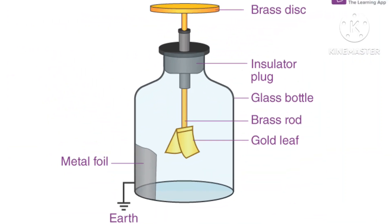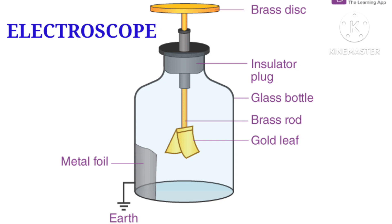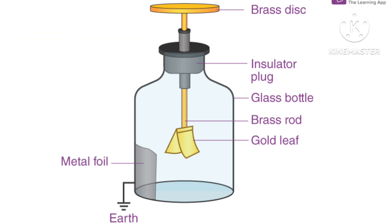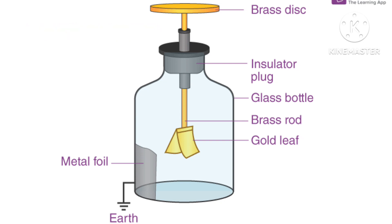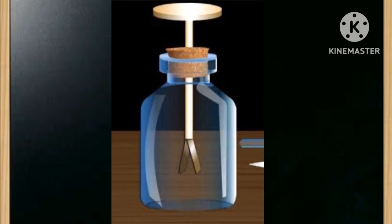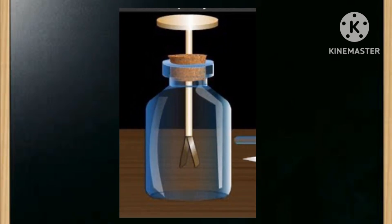An electroscope is an instrument used to test whether an object is charged or not. A gold leaf electroscope consists of a brass rod with a brass disc at its top and two gold leaves at the other end. The rod is inserted through a rubber or plastic stopper into a glass container. A tin foil is used to line the lower part of the inside of the glass container. The electroscope is mounted on a wooden base; the tin foil and the wooden base make the electroscope more effective.